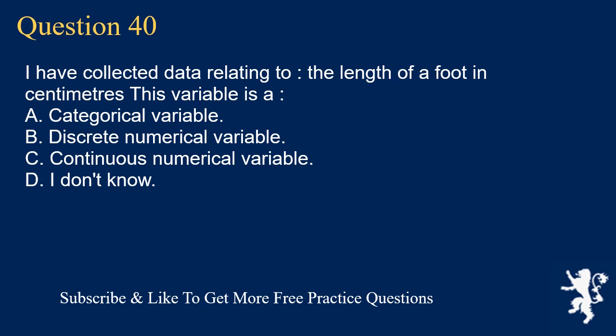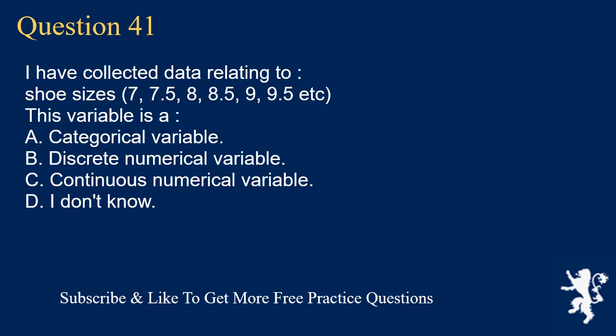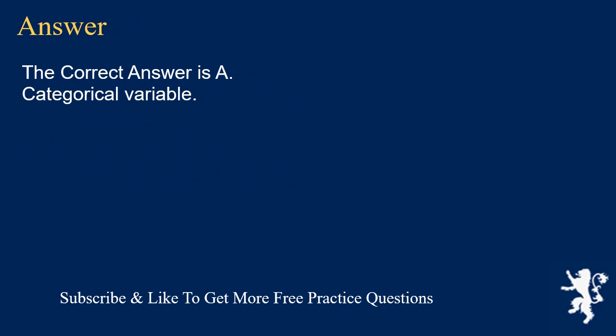Question 40: I have collected data relating to shoe sizes — 7, 7.5, 8, 8.5, 9, 9.5, etc. This variable is A. categorical variable, B. discrete numerical variable, C. continuous numerical variable, D. I don't know. The correct answer is A, categorical variable.